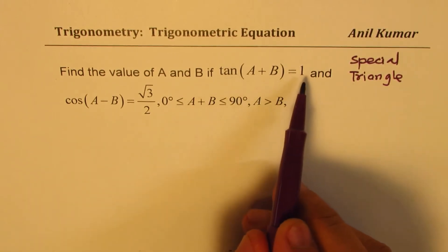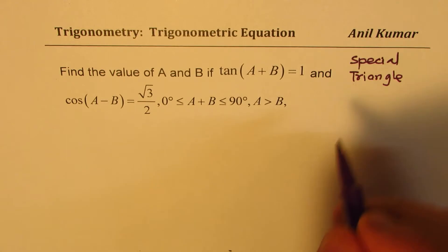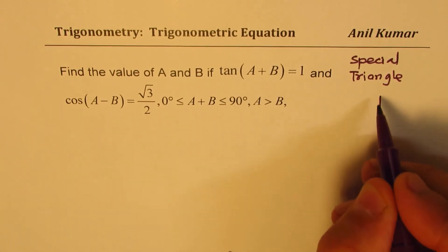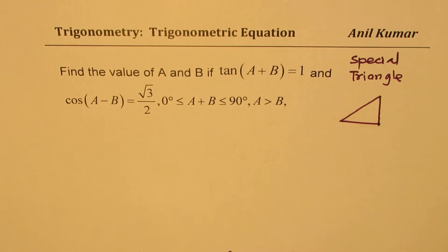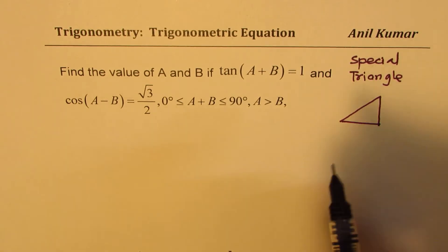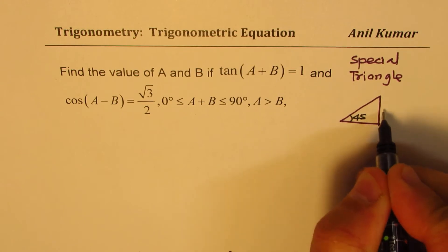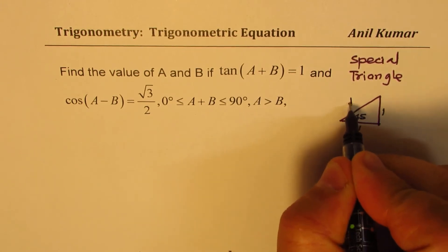Whenever you get tan of 1, think about 45 degrees. So the special triangle of 45 degrees looks like this. This is your 45 degrees and the sides are 1, 1, √2.